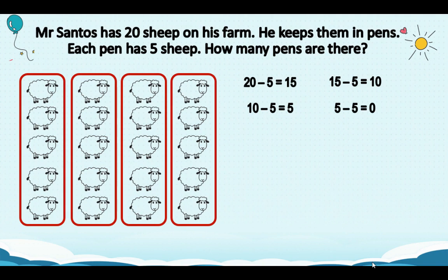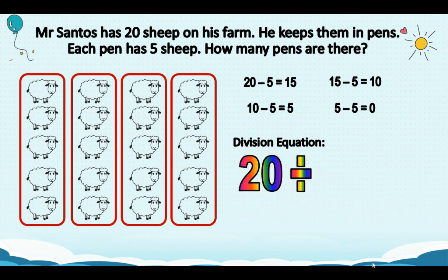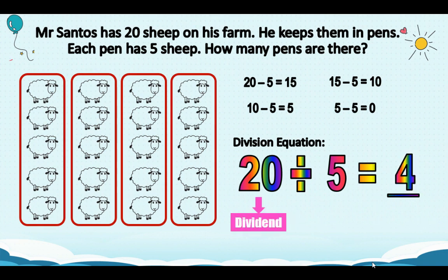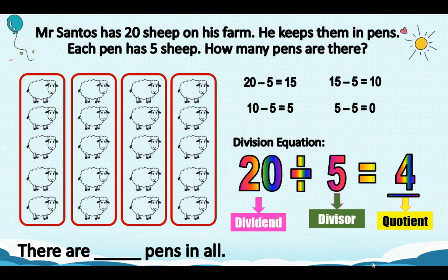So, we did the repeated subtraction. There's another short method to solve this, and that is using division. So, 20 divided by 5 equals how many groups of 5 sheep can you see? We call 20 the dividend, 5 is called the divisor, and our answer in division is called the quotient. Final answer: there are 4 pens in all.